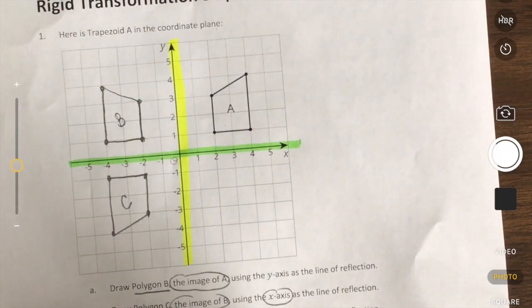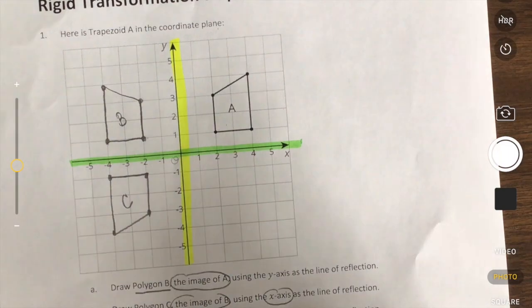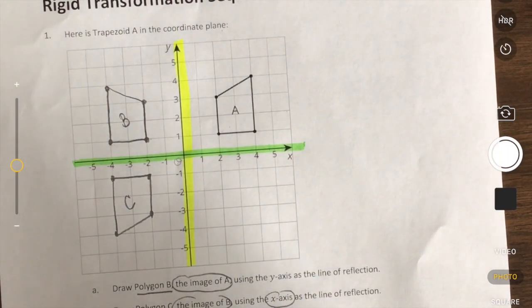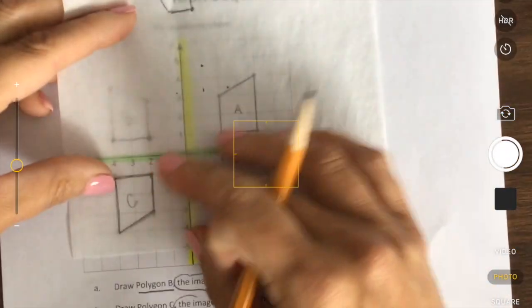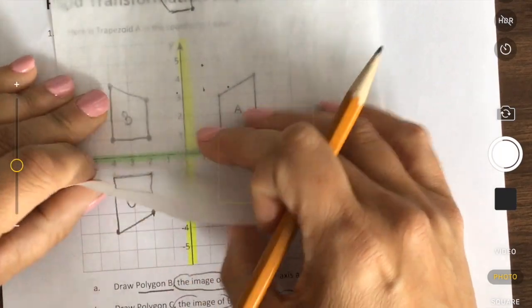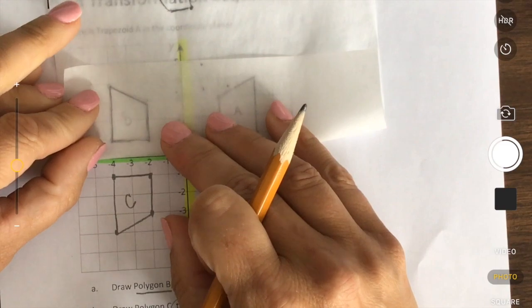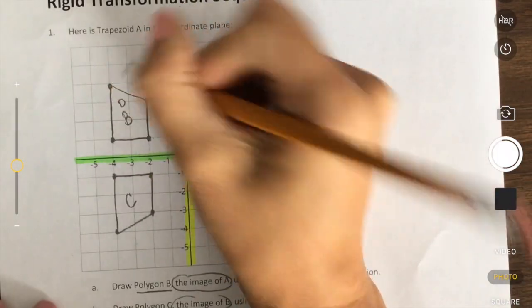Now it says draw polygon D using the image of C using the X axis as a line of reflection. Well, if we think what we did here, we had C down here and we're going to use the X axis. If we flip that over on the X axis, we get right back to B. So B also is D.